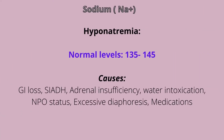Our first electrolyte is sodium, with the chemical notation NA positive. When somebody has hyponatremia it means they have a low sodium level, and our normal levels for sodium are between 135 to 145.